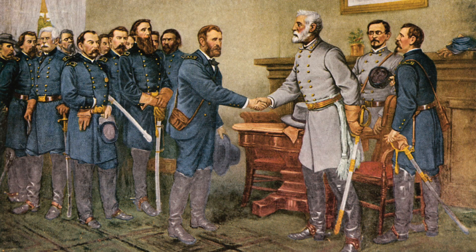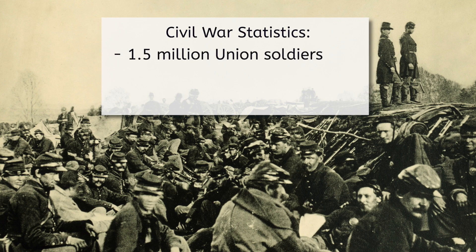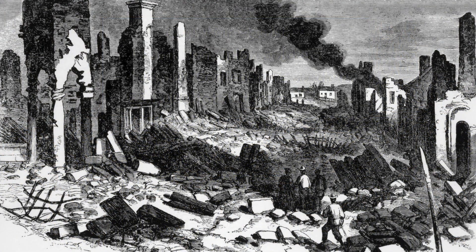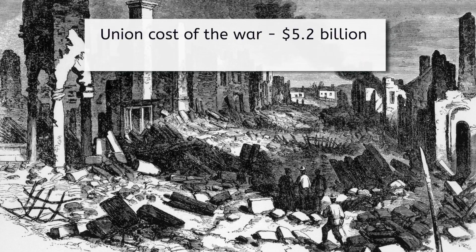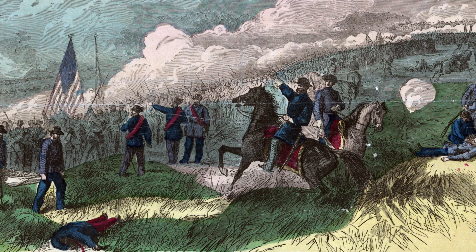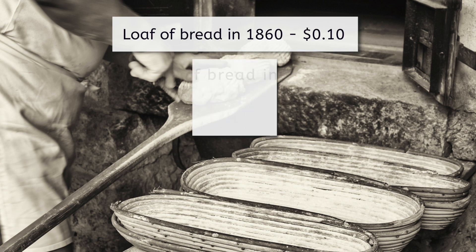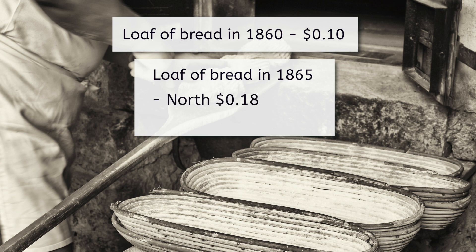In the previous four years before General Robert E. Lee and General Ulysses Grant met at Appomattox, the American Civil War cost the nation dearly. By the end, over 1.5 million men had served in the Union Army, with a close 800,000 for the Confederacy, with an estimated 851,000 deaths in total. In addition to the cost in manpower, monetary costs were estimated at $5.2 billion for the Union, which is roughly $93 billion today. The staggering cost of keeping large armies in the field caused huge inflation throughout both sides. For example, a loaf of bread in the U.S. in 1860 would run about 10 cents. By 1865, inflation in the North had driven the price to 18 cents. By that same year in the South, a loaf of bread would run an astronomical $9.10.